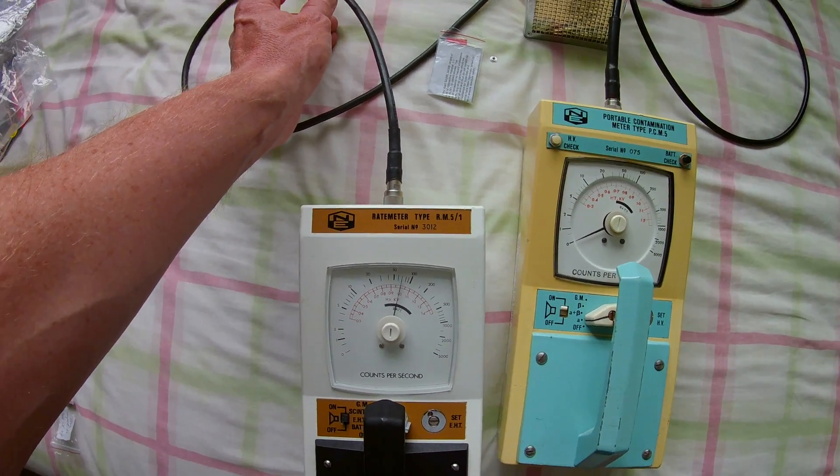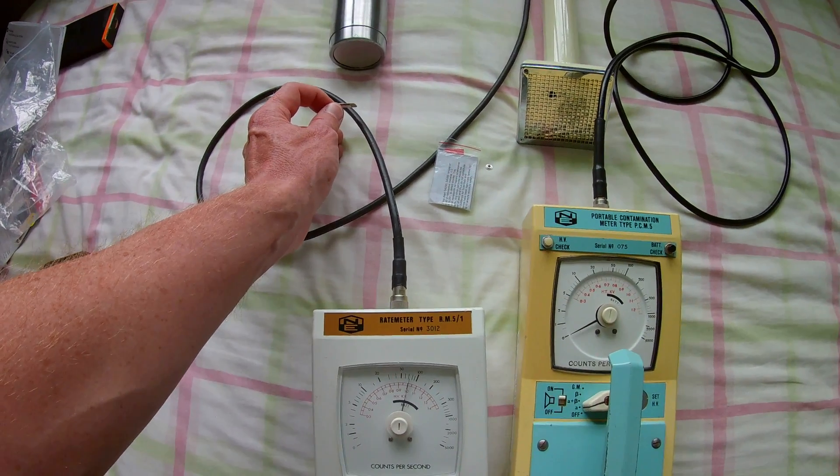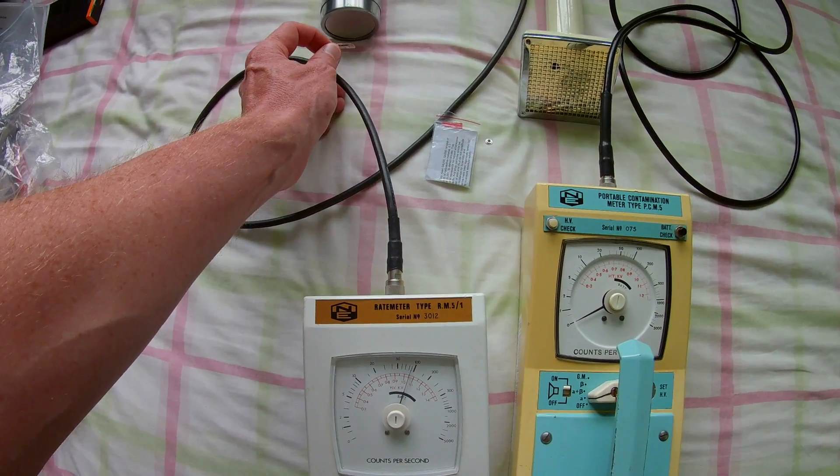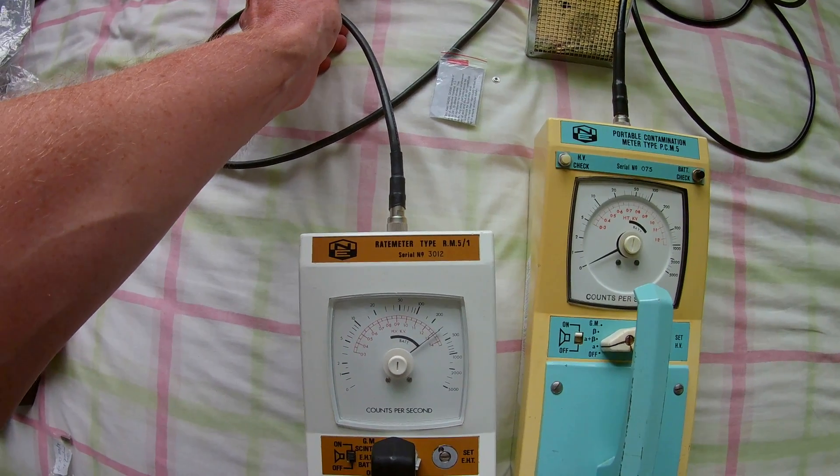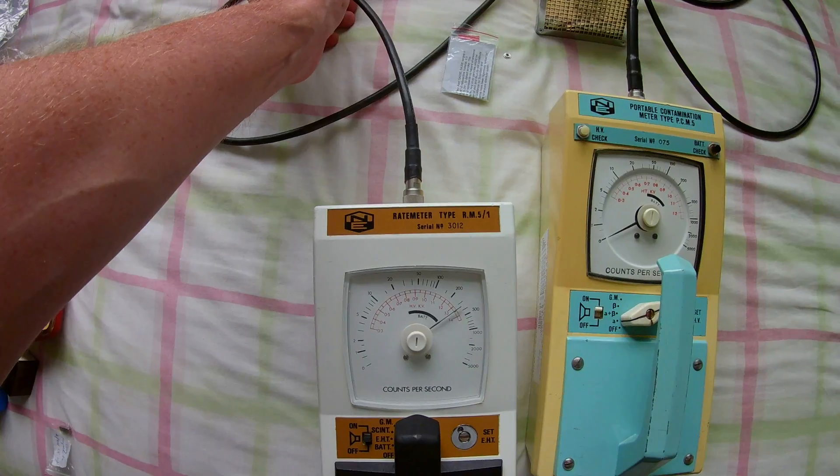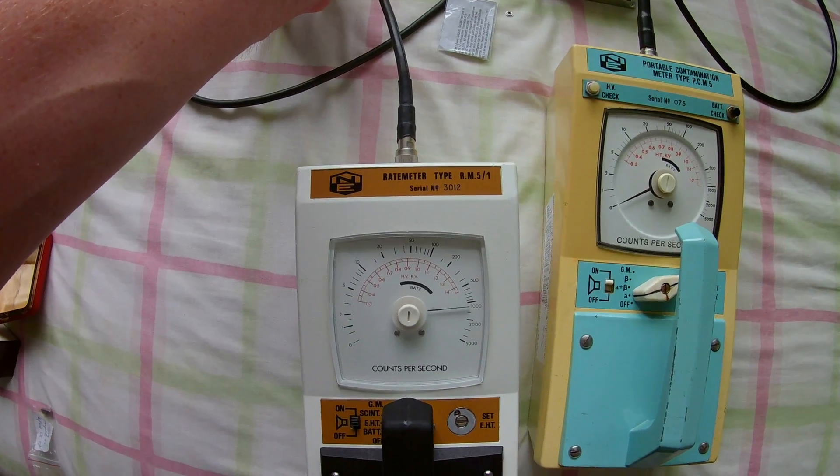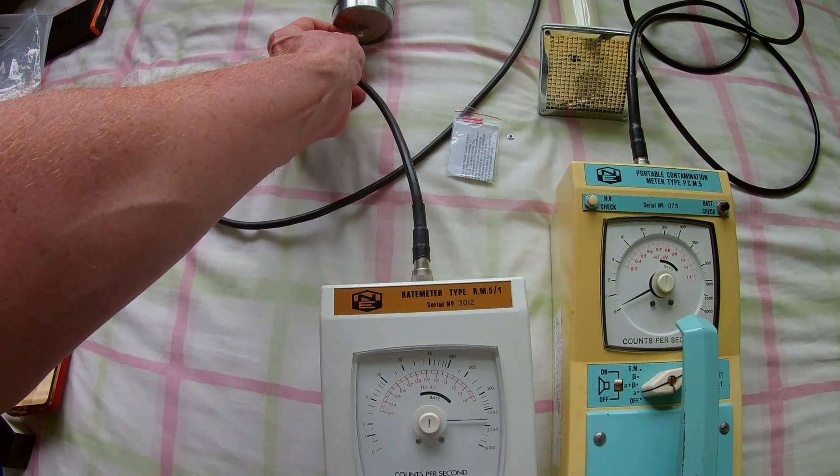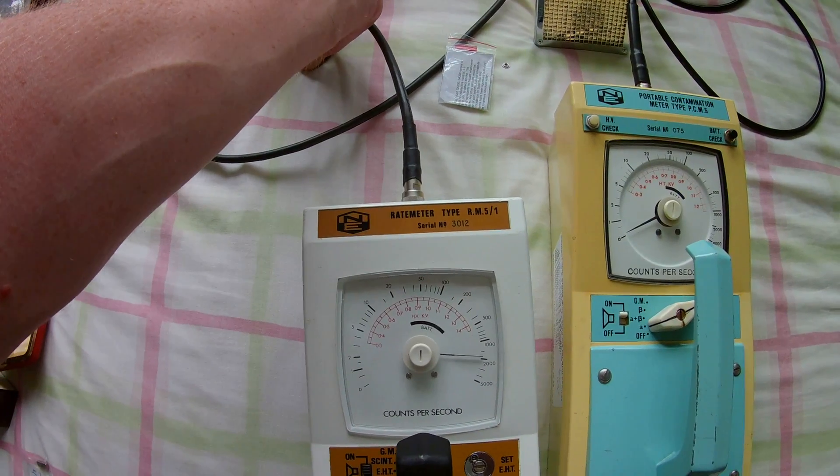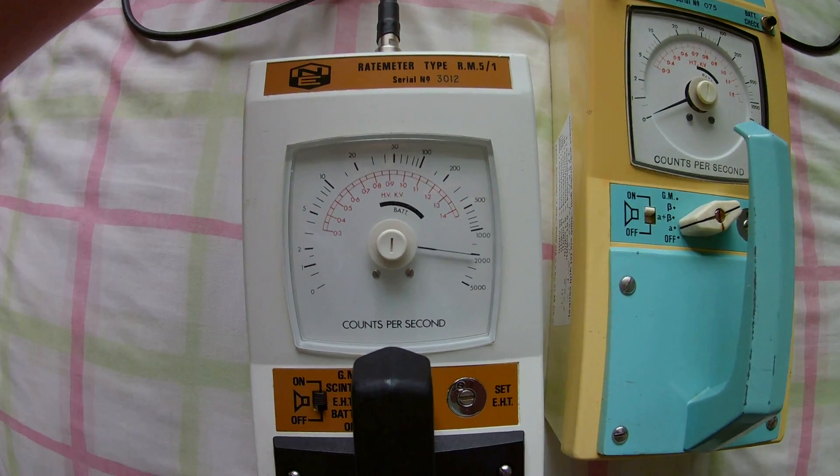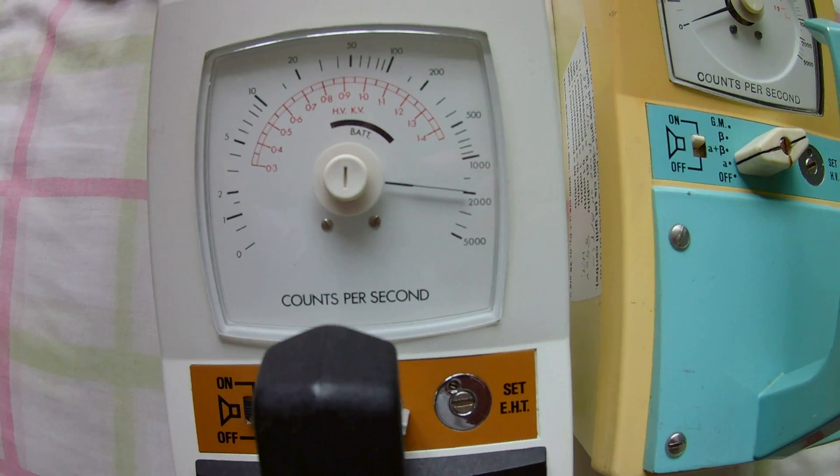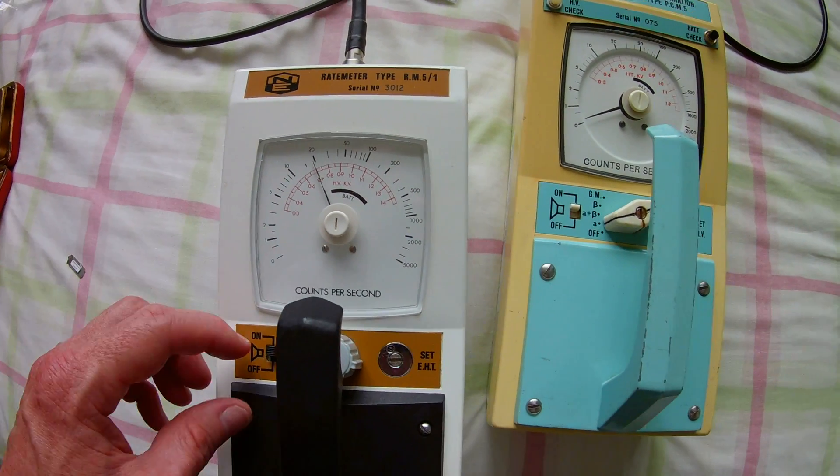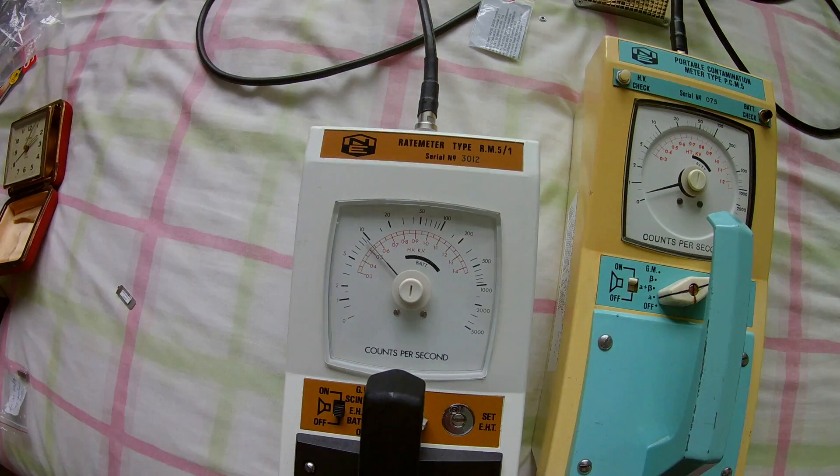Three inches, it's 70 counts. One inch, we're at about 300 counts. This is gamma radiation and then it's going right off in contact. The contact here is about 2000. So we get a similar reading for each one.